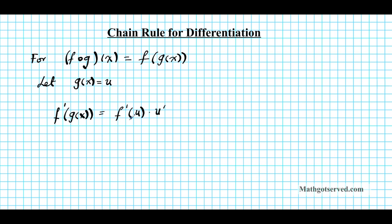Notice here I wrote f prime of u. Calling the inner function u helps me treat it as just a variable. Then after differentiating the outer function keeping the inner fixed, I multiply it by the derivative of the inner function.